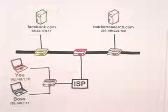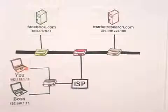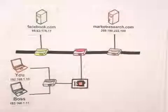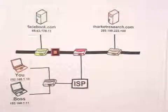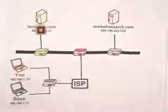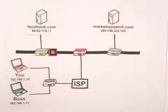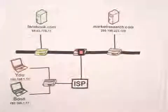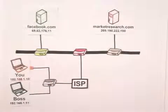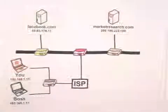Imagine each packet as a piece of candy wrapped in several layers. The first layer is your computer's IP address. Your computer sends the packet to the first router, which adds its own IP address. Each time the packet reaches a new router, another layer is added until it reaches the server. Then when the server sends back information, it creates packets with an identical wrapping. As the packet makes its way over the Internet back to your computer, each router unwraps a layer to discover where to send the packet next, until it reaches your computer and not your boss's.